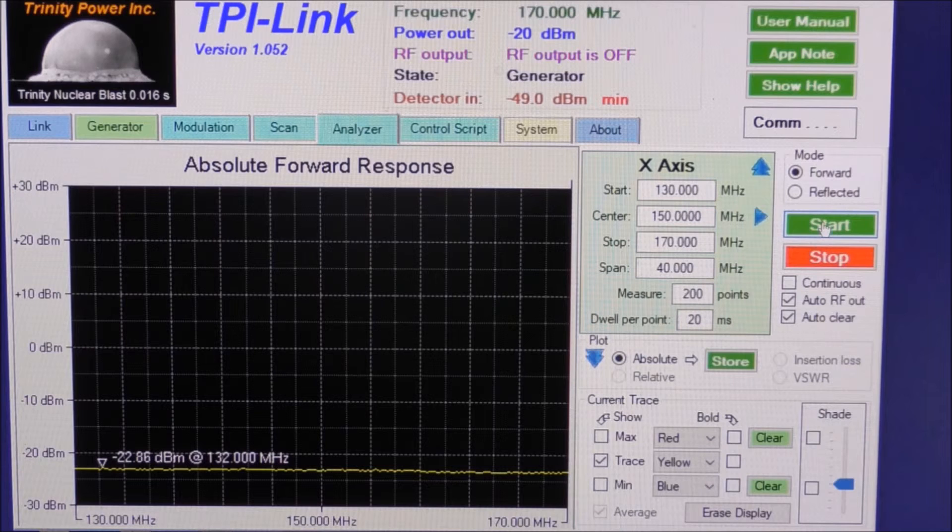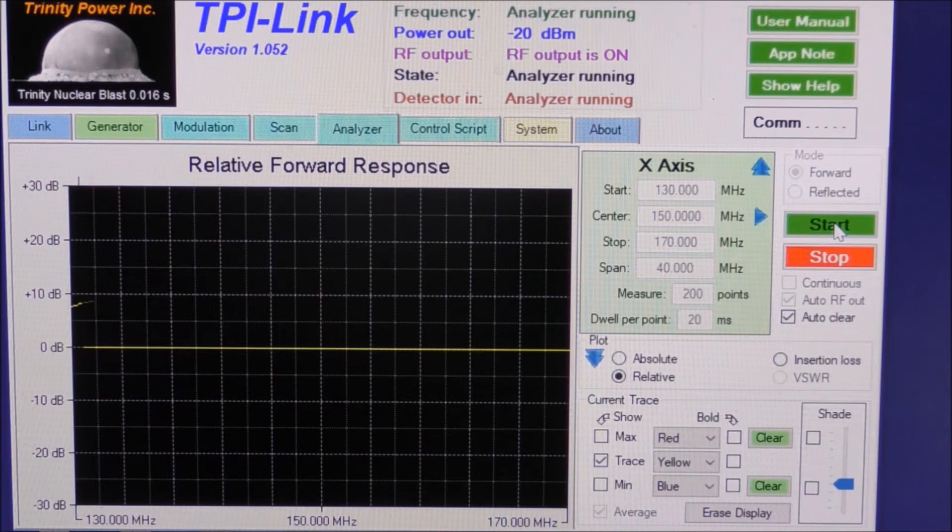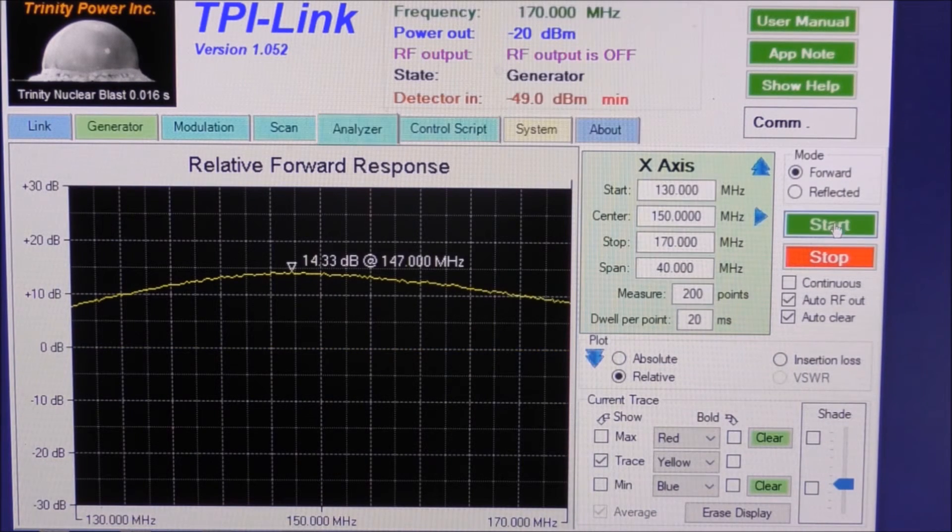Now we go ahead and just do our cable only test. Which we're, our generator of course is minus 20. And outputting at minus 20. And I've got that 3 dB pad. So we can see they're minus 22.86. Go ahead and store that value. And hit start. And we can see the gain rising and then falling again. So the gain is 14.33 dB peak at 147 MHz. Which is as we, as we read.